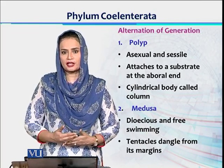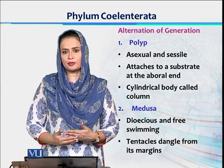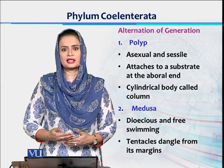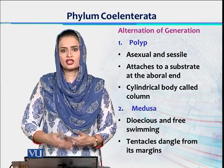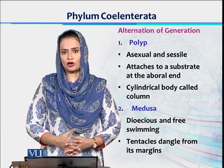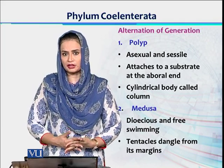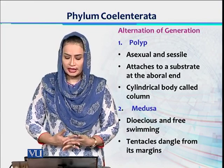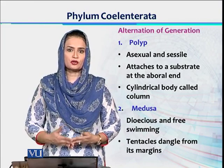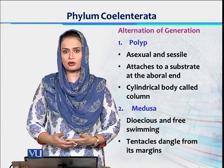One generation is produced by asexual reproduction; it then reproduces sexually, producing gametes which fuse to give another generation that reproduces asexually. There are two types of body forms: one is called polyp and the second is called medusa. The polyp form reproduces asexually through the process called budding.